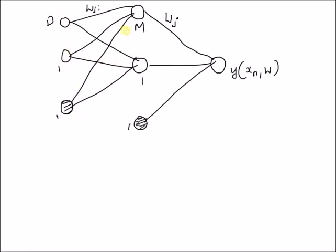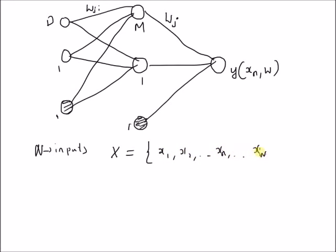Let us consider a neural network with one input layer and one hidden layer, where the input layer has D inputs, the hidden layer has M units, and we have one output y of xn comma w, where n is the index of the input. We have N inputs — the input matrix X is equal to the sequence of vectors X1, X2, up to X capital N. We also have a target vector T which has N target values T1, T2, up to Tn, where each target Tn is a scalar.